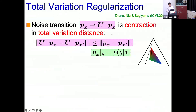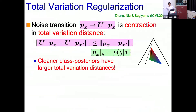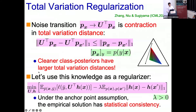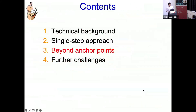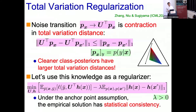Specifically, if we have two vectors p of x and p of x prime, their transformed versions U transpose p of x and U transpose p of x prime have smaller L1 norm than the original ones. Once we apply U transpose, vectors become closer in the simplex. This is intuitive: cleaner class posteriors have larger total variations and are more separated, but as they become noisier they get closer. We use this as a regularizer: maximize the L1 distance between pairs, sampled over x and x prime. Under the anchor point assumption, we can show the empirical solution has statistical consistency — solving the problem in one step.